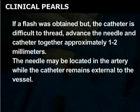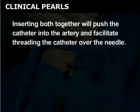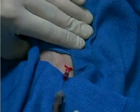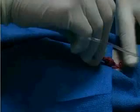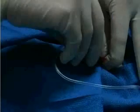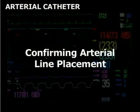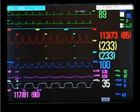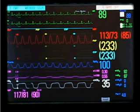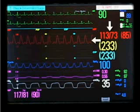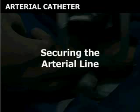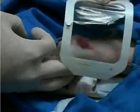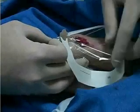Remove the needle and connect the hub of the arterial catheter to the pressure tubing of the transduction system. After connecting the arterial catheter to the transduction system, confirm placement by watching the monitor. Look for a corresponding blood pressure measurement. A tegaderm should be placed over the hub and catheter entry site to keep the skin clean and dry. Loop the tubing around the patient's thumb and secure the tubing to the patient's wrist and forearm. This decreases the amount of tension placed on the catheter and will help to prevent it from dislodging.